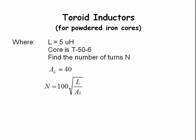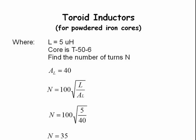Next, we use the formula N equals 100 times the square root of L over A sub L. This gives us a formula of N equals 100 times the square root of 5 over 40, which equals 35 turns.